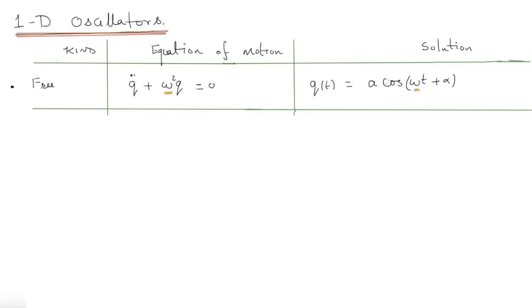Here the omega is the same as what you have on the left hand side, and alpha and A are dependent on your initial conditions — what you choose the initial conditions to be. Of course, you can choose your time such that alpha can be removed.